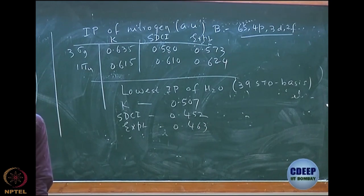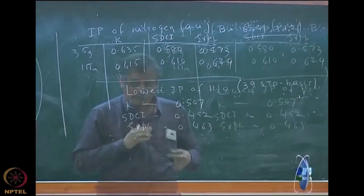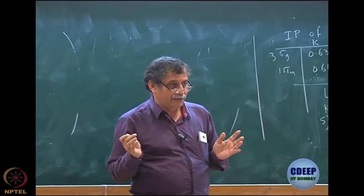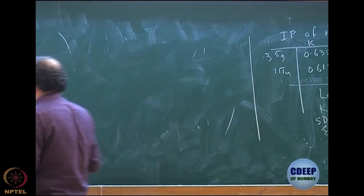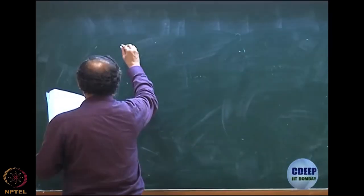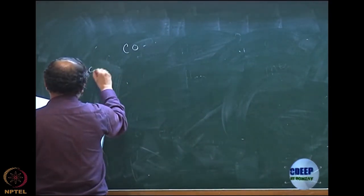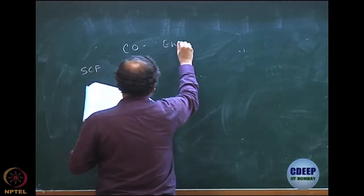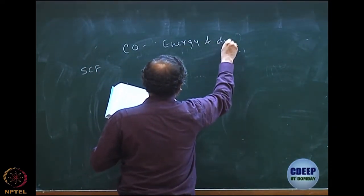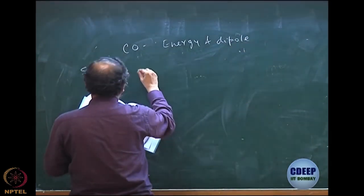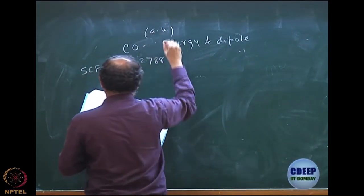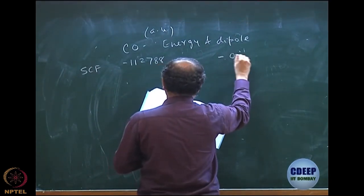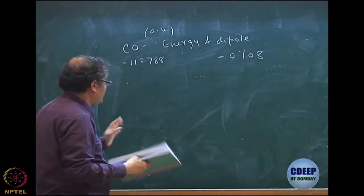Then there are effects of singles and doubles - this is a very important table. It comes out as CO in actual practice. So let us look at CO dipole moment. We will look at the energy and dipole moment. The SCF energy is -112.788 atomic units and the dipole moment is -0.108 atomic units. The positive direction is C-minus O-plus; this means SCF gives C-minus O-plus, which is wrong.